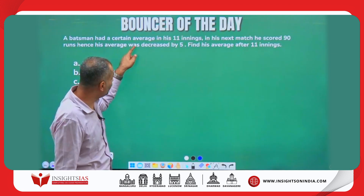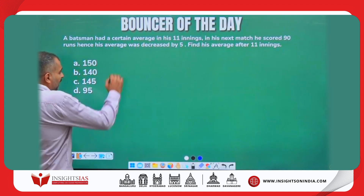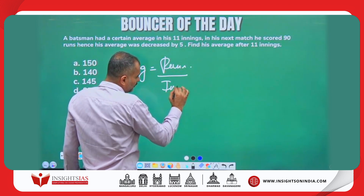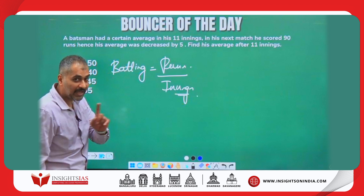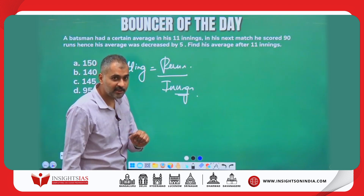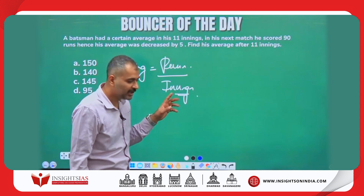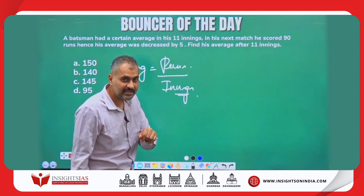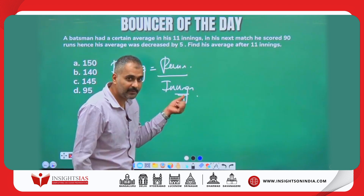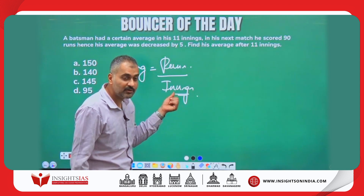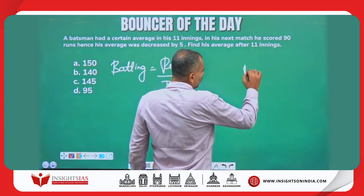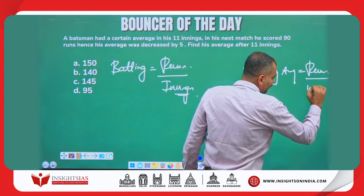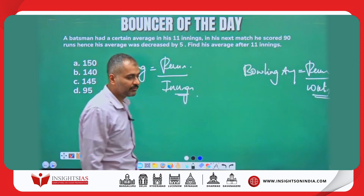Now, how to find the batting average? If you are not familiar, look here: batting average is runs per innings — total number of runs divided by total number of innings. For example, a player may have played 100 matches but only batted in 90 innings, so the scorecard shows 90 innings. Bowling average, which is runs conceded per wickets taken, we will do in the next question.